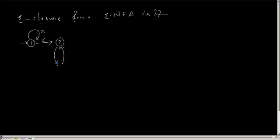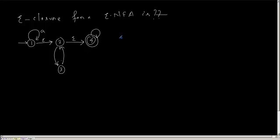The set of states you can reach from a given state — that is called epsilon closure. Can you tell me what will be my epsilon closure for state 1?